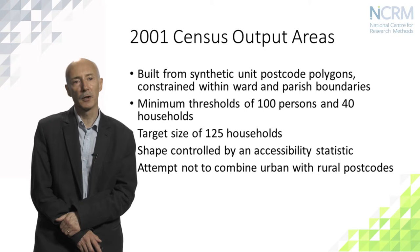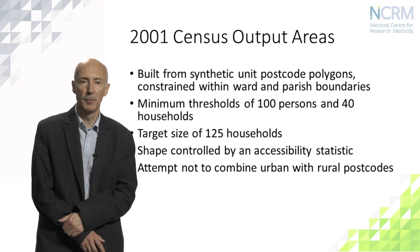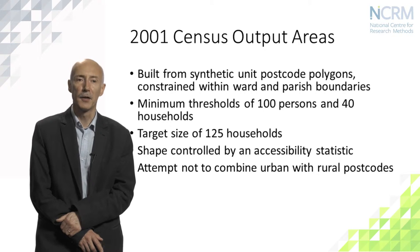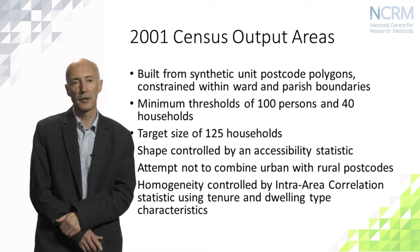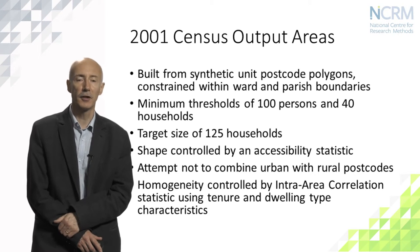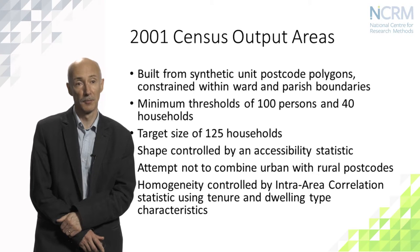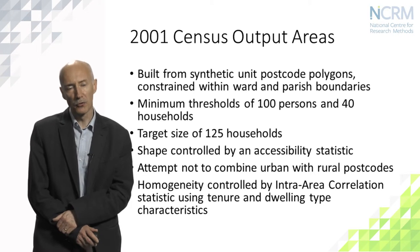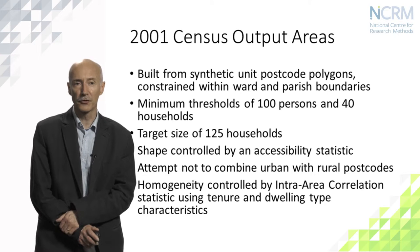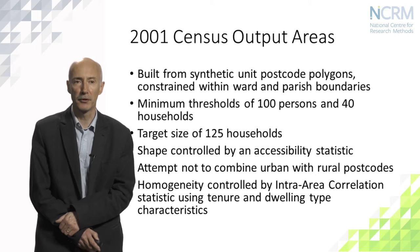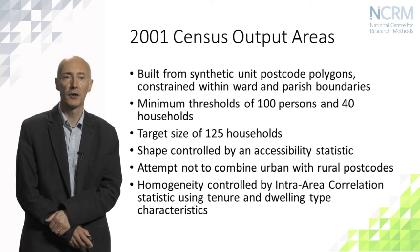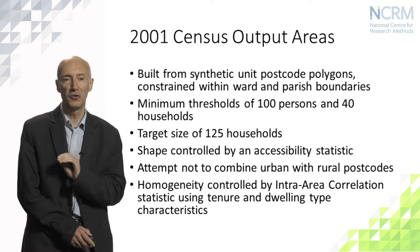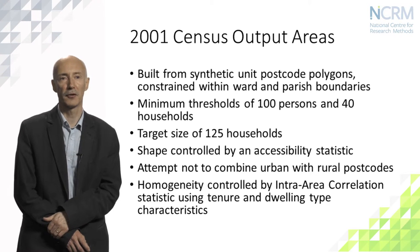There was also a metric included which made it unattractive to combine urban with rural postcodes, and again the goal was to provide a clear demarcation of urban areas. Homogeneity in this original design was controlled using an intra-area correlation statistic based on tenure and dwelling type classifications from the 2001 census. The whole zonation was implemented after the census had been collected and before the data were published, meaning there were no zones which had to be suppressed because populations were too small — every zone was designed to meet the census confidentiality criteria.